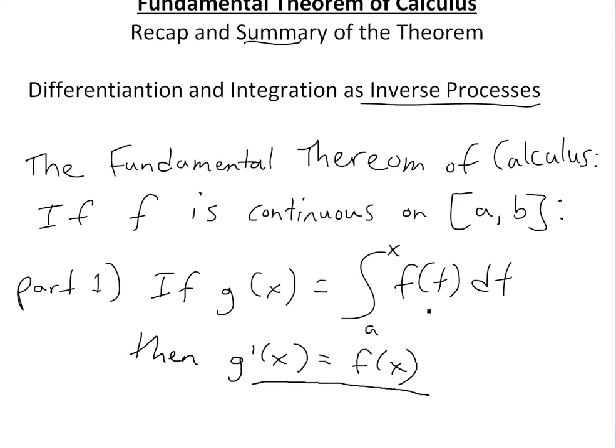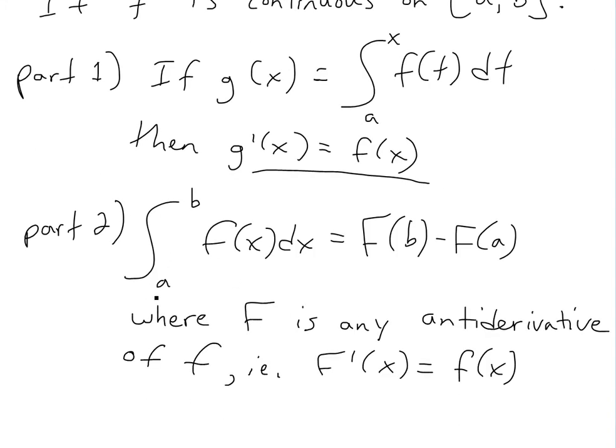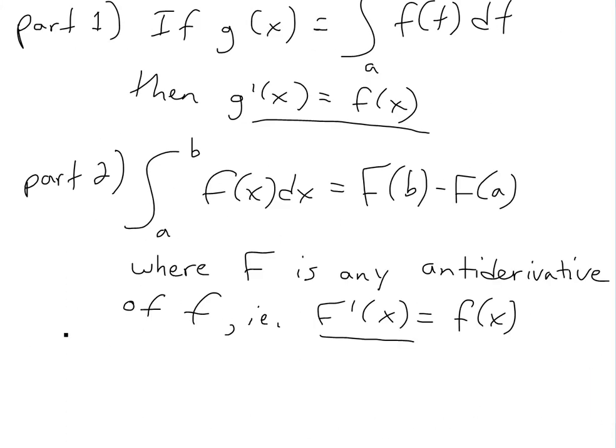And now part two of the theorem basically is from a to b, integral of f(x) dx. This just equals to the anti-derivative at b minus anti-derivative at a, where capital F is anti-derivative of f, or basically f prime of x is equal to f of x here. So this is the entire theorem in both parts.